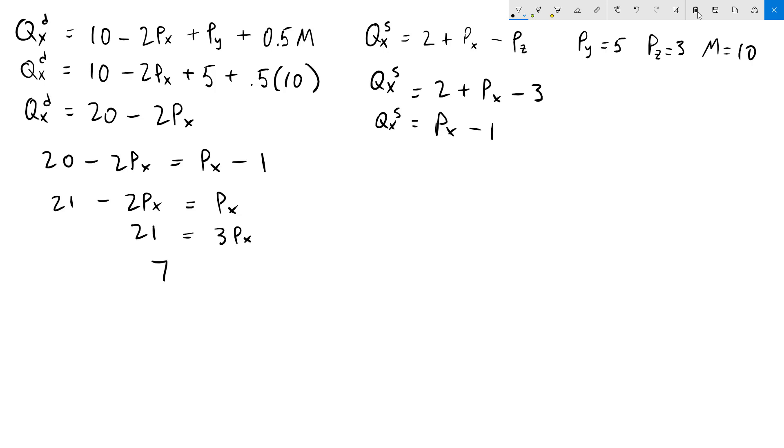Divide both sides by 3. We'll get Px is 7. I'll put an E on that to indicate that that is our equilibrium price. To get the equilibrium quantity, we're going to substitute 7 in for the price in either our demand function or supply function. They should come out the same.